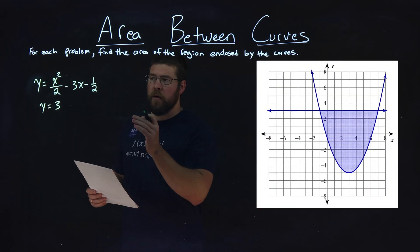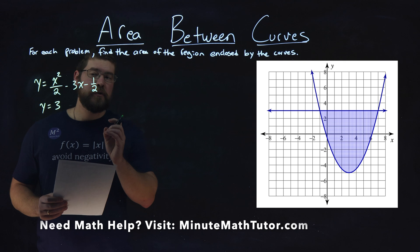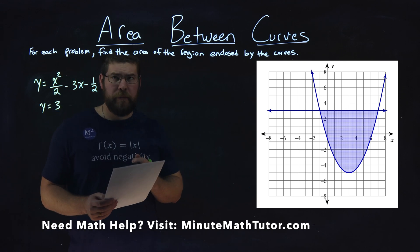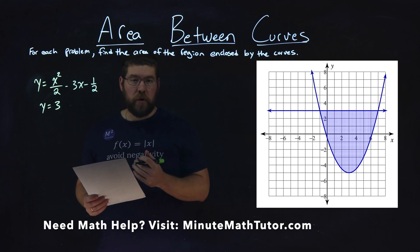We're given this problem right here: y equals x squared over 2 minus 3x minus one-half and y equals 3. And we're going to find the area between the regions enclosed.